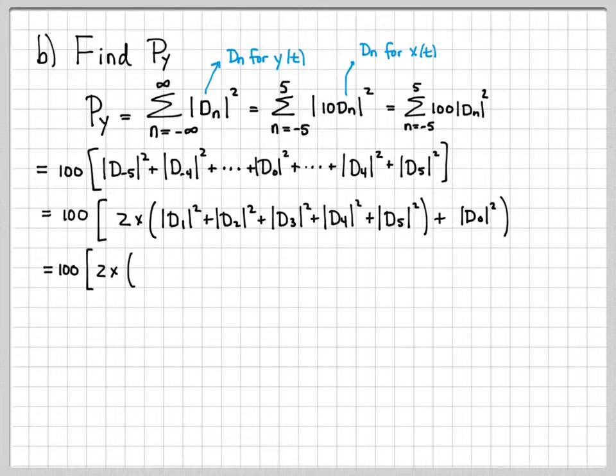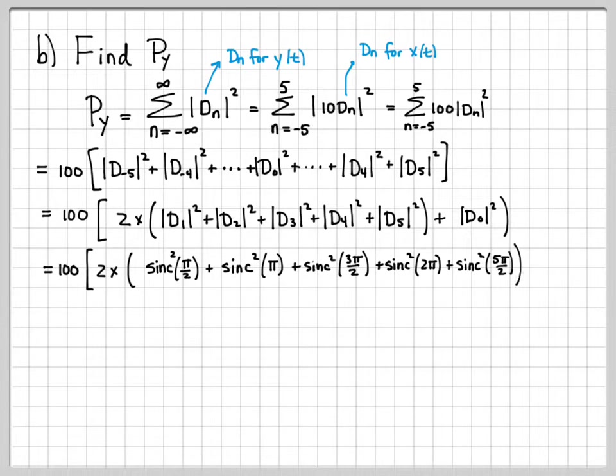And then finally, we can actually go plug in and figure out what the d1, d2, and d3 are. So d1 is sinc squared, I'm sorry, d1 squared is sinc squared of pi over 2. d1 is actually equal to sinc of pi over 2. d2 is sinc of pi, so then we square it. d3 is sinc of 3 pi over 2, sinc of 4 pi over 2, which is 2 pi, and then sinc of 5 pi over 2. And then add on d0 is equal to 1.